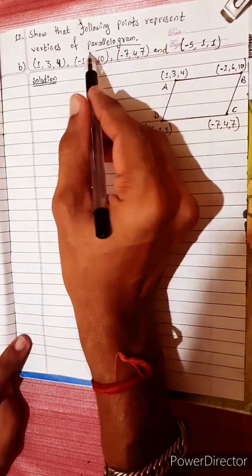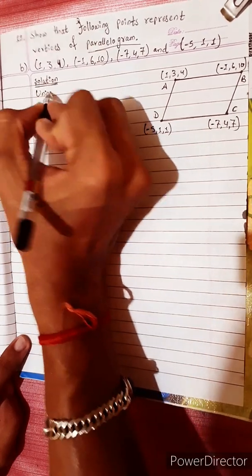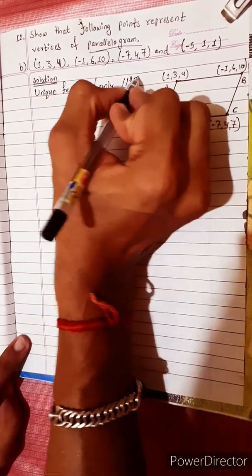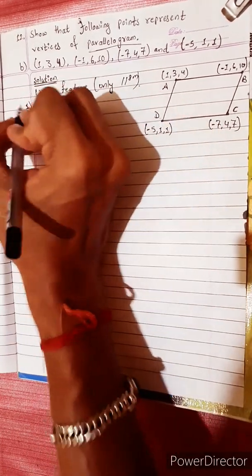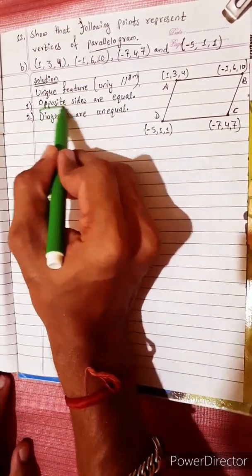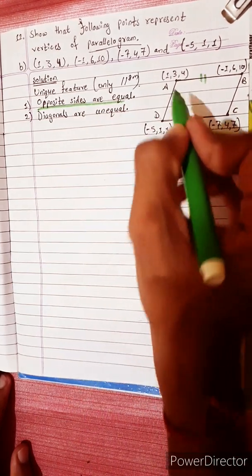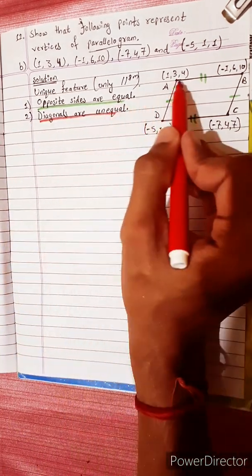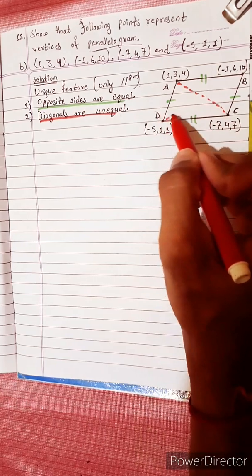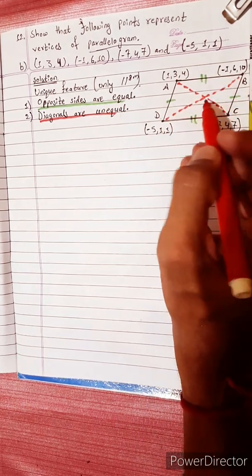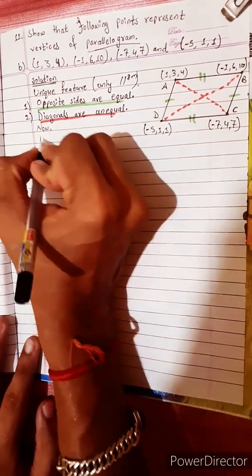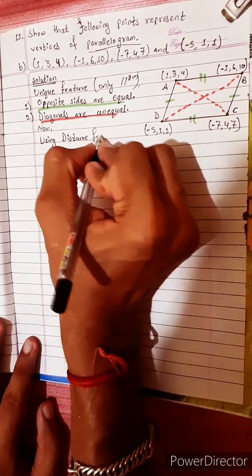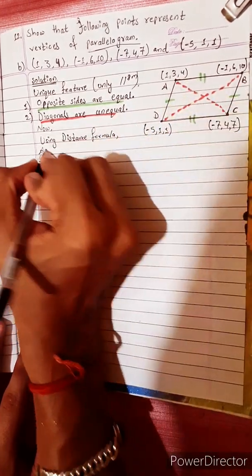Now, these points represent vertices of a parallelogram. A parallelogram has this unique feature: the opposite sides are equal, and the diagonals bisect each other. We will use the distance formula to verify. The distance formula is used here.